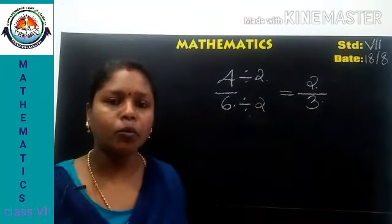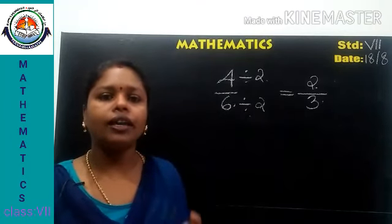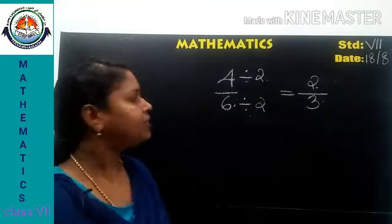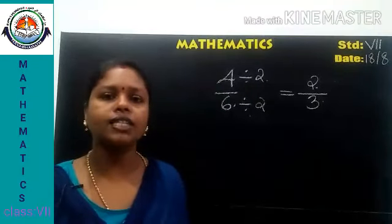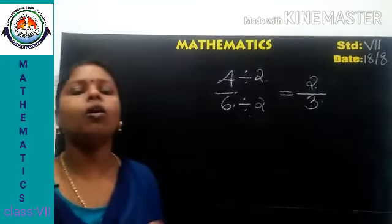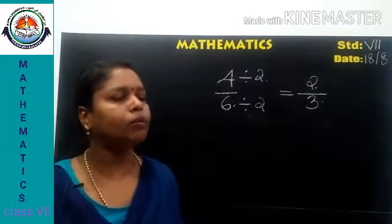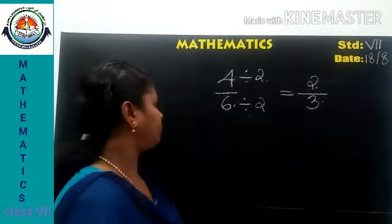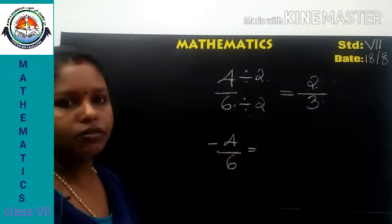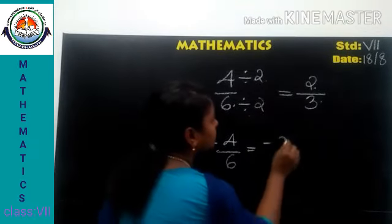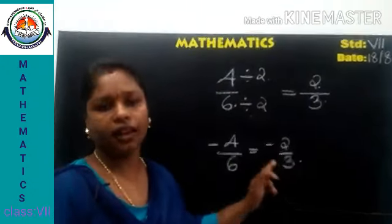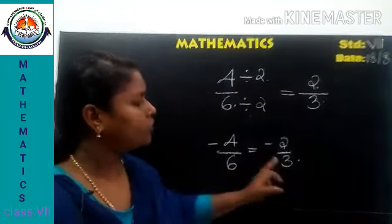To get the standard form, we remove the common factors — ideally the highest common factor, that is the HCF. The same applies to rational numbers. For example, negative 4 by 6: the HCF of 4 and 6 is 2, so we divide both by 2 to get negative 2 by 3. The standard form of negative 4 by 6 is negative 2 by 3.